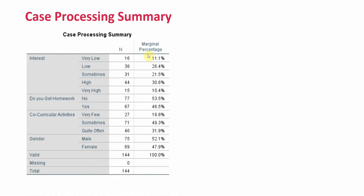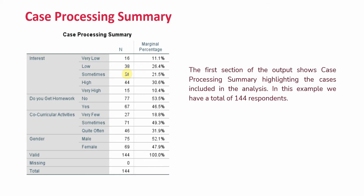The first table in the output is the Case Processing Summary, which shows the cases included in the analysis. In this case we have 144 respondents: 75 male and 69 female. For co-curricular activities, 27 said they have very few, 71 said sometimes, and 46 said quite often. The other categories and their frequencies with percentages are also shown.